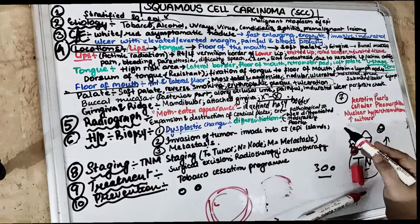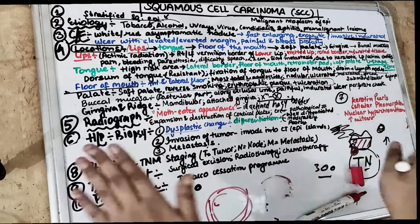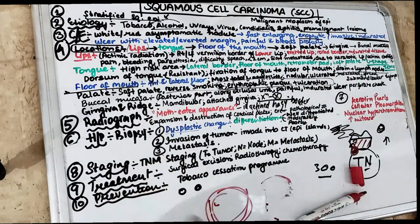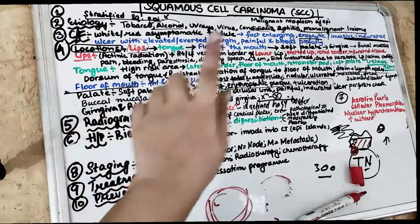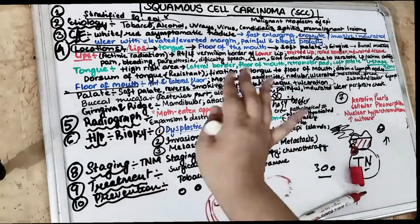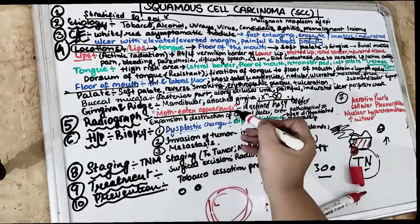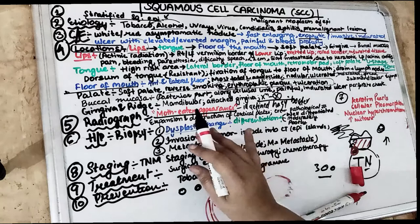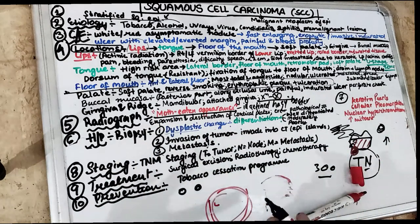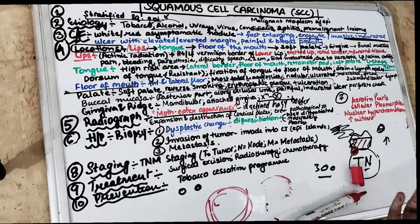Radiographic appearance: it looks like there is an ill-defined, hazy border — the borders are not well-defined. Unlike a cyst which has very well-defined borders, in carcinoma the borders are hazy and blurred — we call this the moth-eaten appearance. Because of the expansion of the carcinoma, there can be expansion and destruction of the cortical plates, and even pathologic fracture can occur.